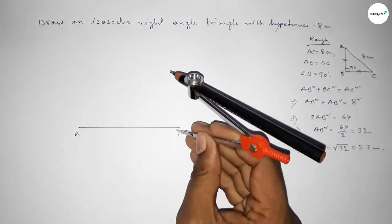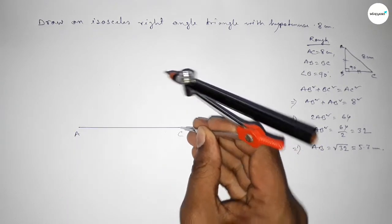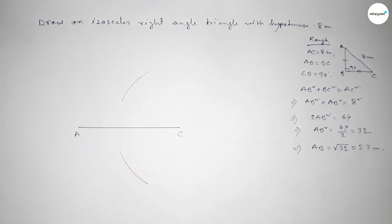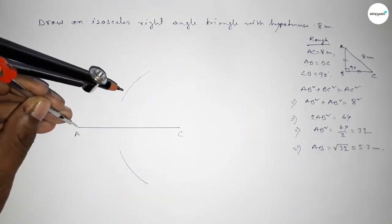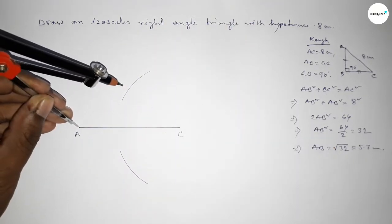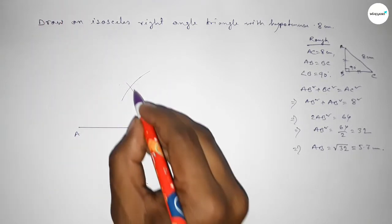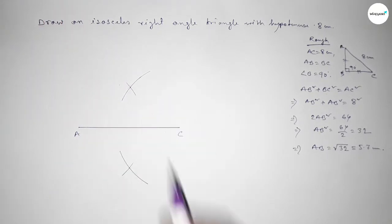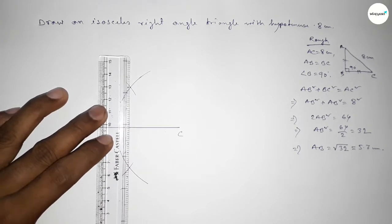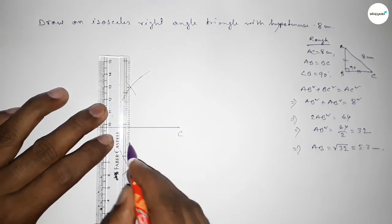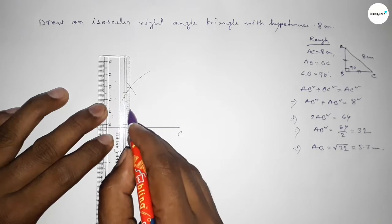Selecting this line, putting the compass here and taking greater than half of AC, drawing an arc. With the same length, putting the compass on C and cutting arcs on both sides so both curves intersect at two points. Now joining the bisector.